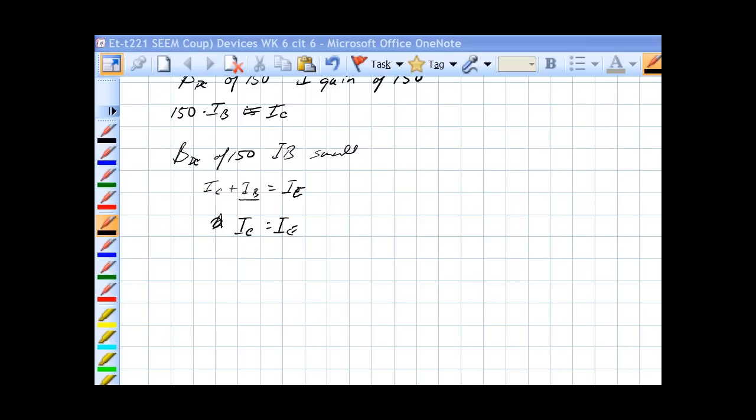So let's put this in a circle, but before we do that, we need to find out what alpha is. Alpha DC is equal to IC over IE. Well, if IC is approximately equal to IE, then this should be less than one, but not by much.